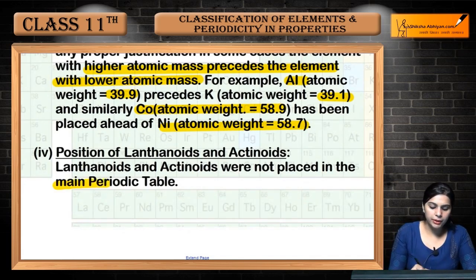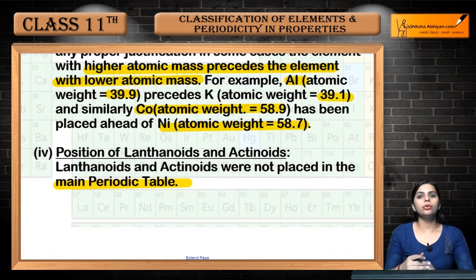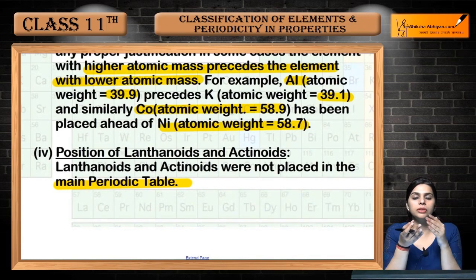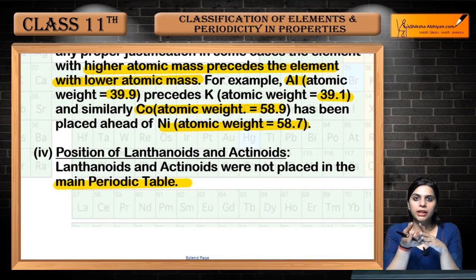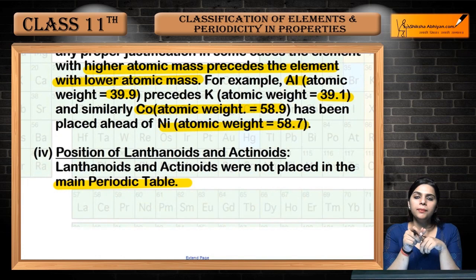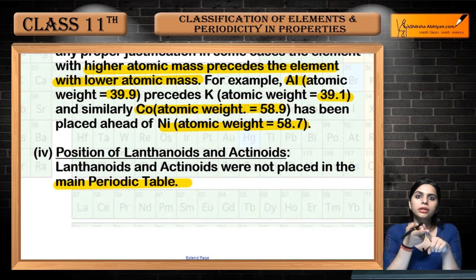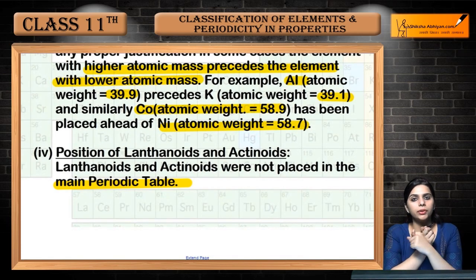Another major defect was the position of lanthanoids and actinoids, which were not properly placed in the periodic table. This was a significant drawback, and Mendeleev's periodic table failed to accommodate them, which is why modifications were needed to arrive at the modern periodic table.